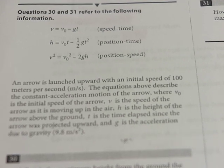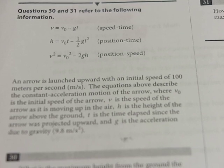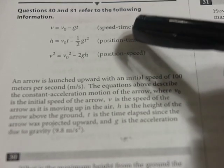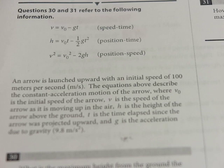I'm going to read this, and then I'm going to tell you exactly what they're looking for, and then I'm going to show you exactly how to do it using your calculator. It says, an arrow is launched upward with an initial speed of 100 meters per second. The equations above describe the constant acceleration motion of the arrow, where v₀ is the initial speed of the arrow, v is the speed of the arrow as it is moving up in the air, h is the height of the arrow above the ground, t is the time elapsed since the arrow was projected upward, and g is the acceleration due to gravity, 9.8 m/s².